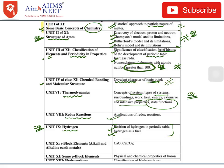In Unit 10 — S Block Elements, Alkali and Alkaline Earth Metals — everything related to calcium oxide and calcium carbonate has been deleted from the syllabus. In Unit 11 — P Block Elements — the physical and chemical properties of boron have been deleted.